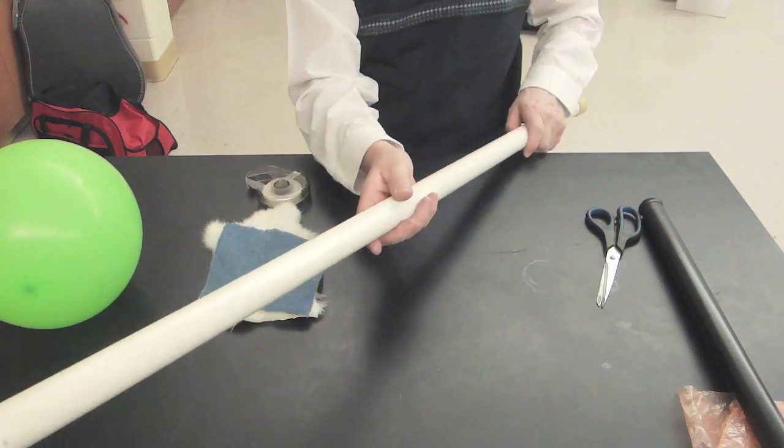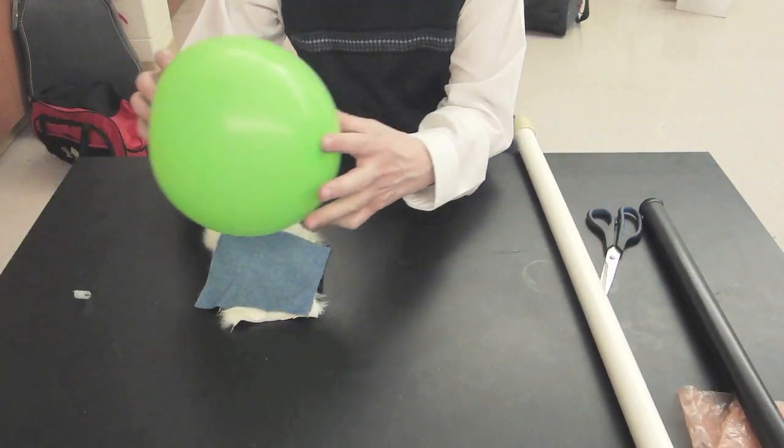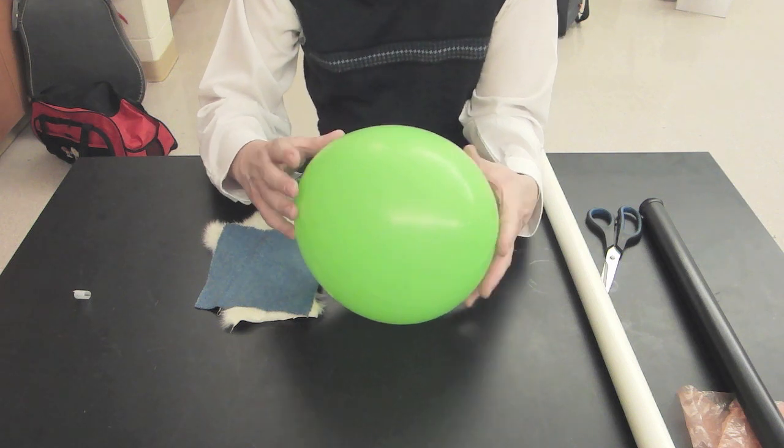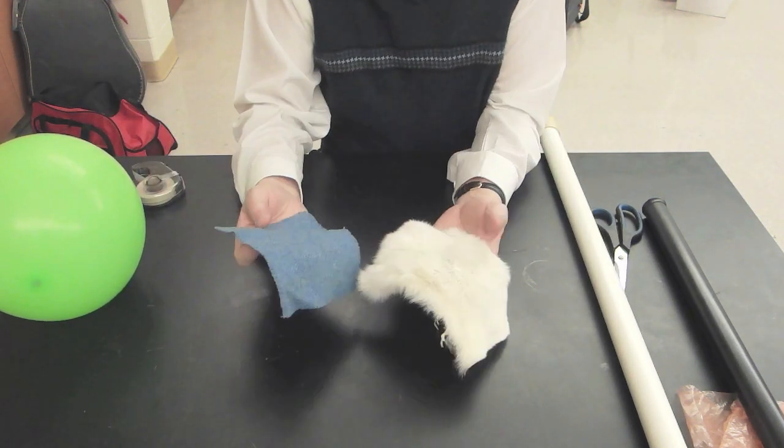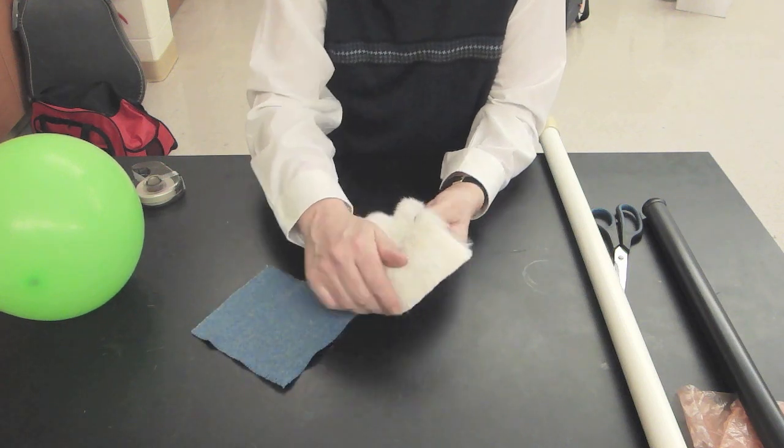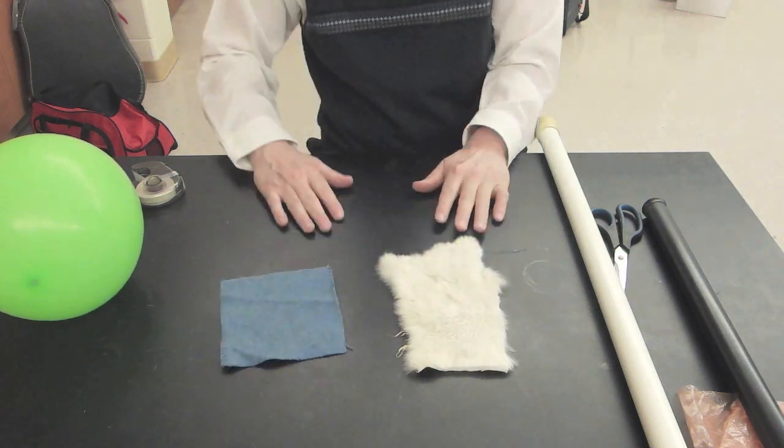This one's fairly long but it works really well and we're also going to try a balloon and see how that works. Now the last thing we need is a material to give up electrons. Wool works pretty well but my favorite is either a real or fake fur, so let's go try it.